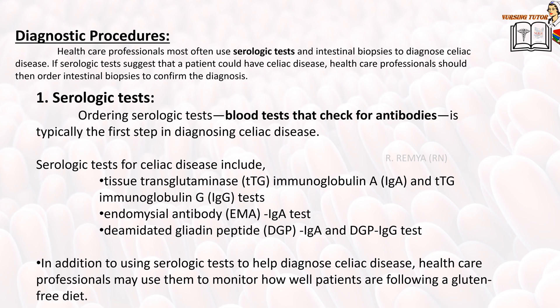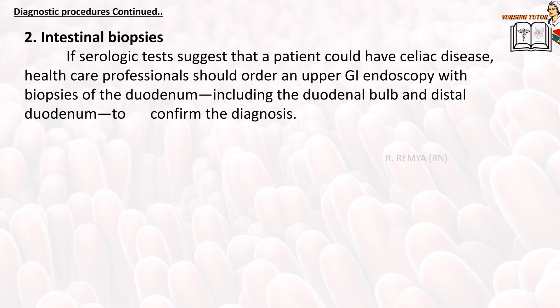In addition to diagnosing celiac disease, serologic tests may be used to monitor how well patients are following a gluten-free diet. Serologic tests for celiac disease include: tissue transglutaminase IgA (tTG-IgA) and tTG-IgG tests, endomysial antibody IgA (EMA-IgA) test, and deaminated gliadin peptide IgA (DGP-IgA) and DGP-IgG tests.